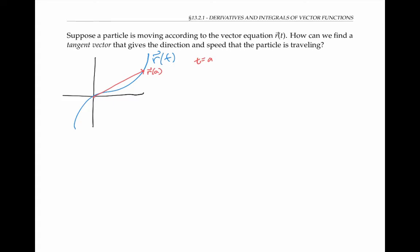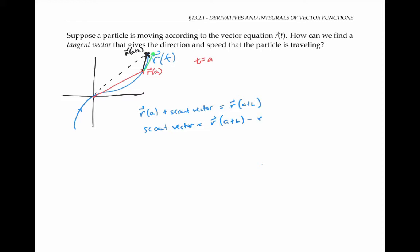Now I want to find the tangent vector at t equals a, which is going to be a vector pointing in approximately this direction, assuming that the curve is being traversed in this direction as t increases. To find that tangent vector, I can use the same techniques that we used in calculus one — I can look at a nearby point, r of a plus h for some small number h. Here's the vector r of a plus h. And now I can look at the secant vector that goes in between r of a and r of a plus h. By vector arithmetic, the vector r of a plus the secant vector equals the vector r of a plus h, so the secant vector is equal to r of a plus h minus r of a.